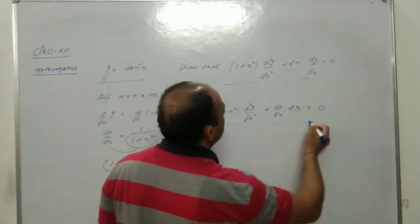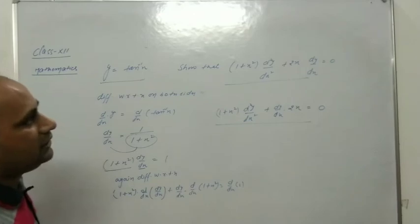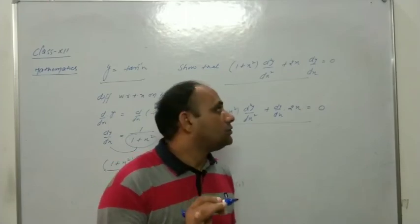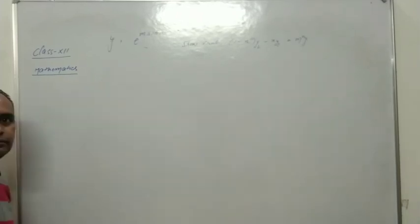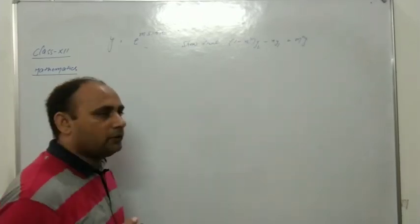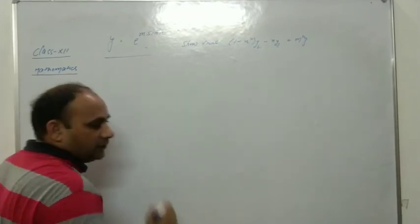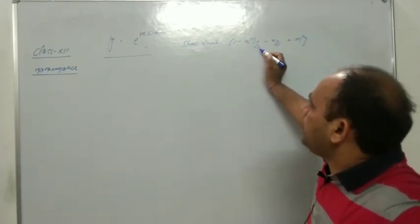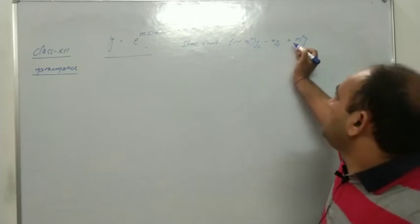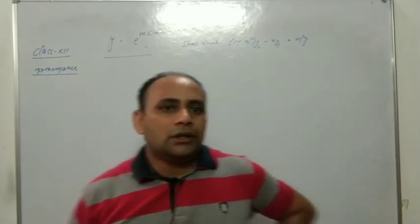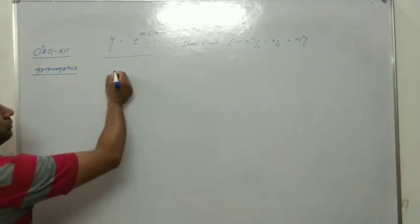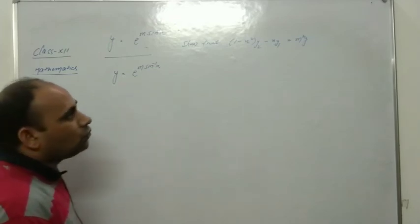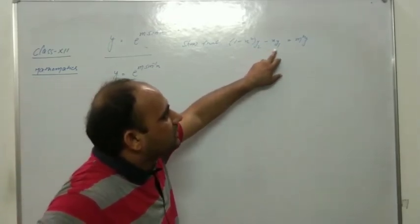Next problem: y = e^(n·sin⁻¹x). Prove that (1 − x²)·y₂ − x·y₁ = n²y. We differentiate both sides with respect to x. Using the chain rule for e^(f(x)): derivative is e^(f(x)) times f'(x). Here f(x) = n·sin⁻¹(x), so f'(x) = n/(√(1 − x²)). Thus y₁ = y · n/√(1 − x²).